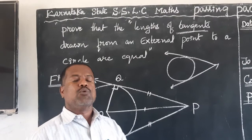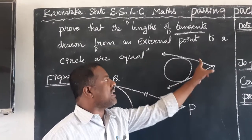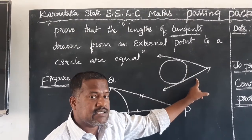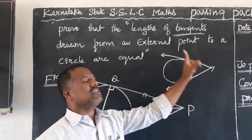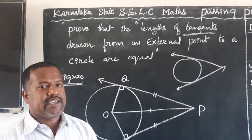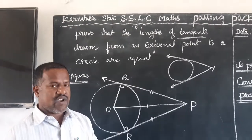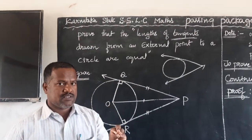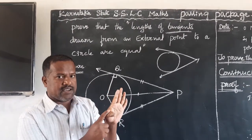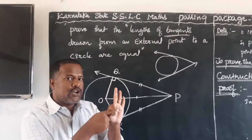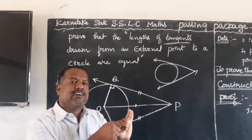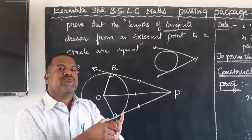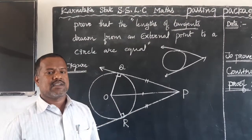In this theorem, we have to prove that these two tangent lengths are equal. In every theorem we have five steps: the first step is figure, the second step is data, the third step is to prove that, the fourth step is construction, and the fifth step is proof — with statement and reason columns.